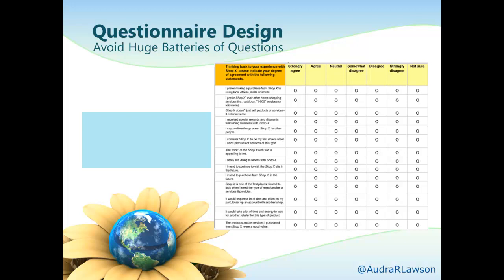You also want to be careful about avoiding huge batteries of questions — where you have a single lead-in like 'indicate how much you agree or disagree with the following statements' followed by a long list. There are three reasons to sometimes avoid these. First, they can be tiresome; they look onerous, which can hurt response and dropout rates. Also, researchers will ask long batteries where respondents have to scroll up to find the anchors again, which reduces reliability because people can end up flipping which end of the scale is which.